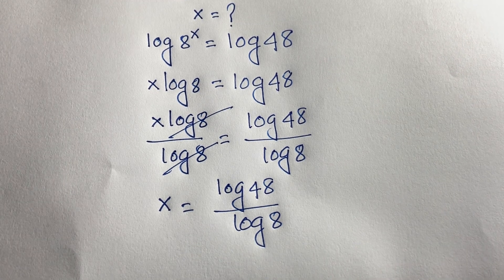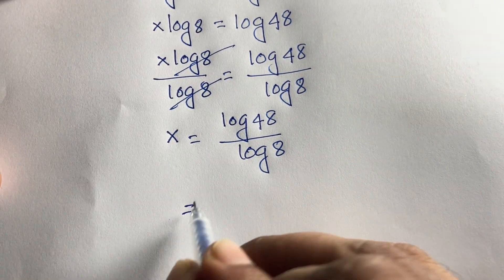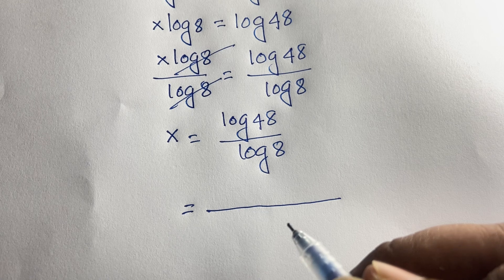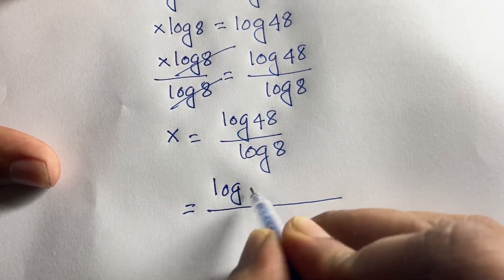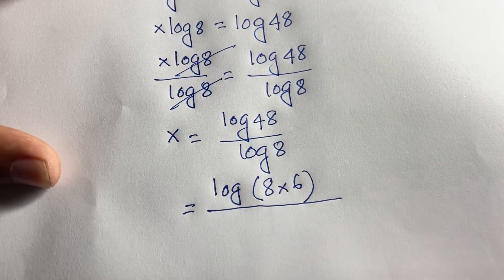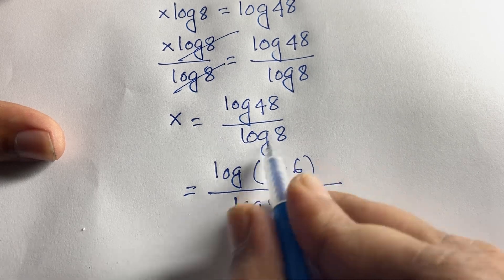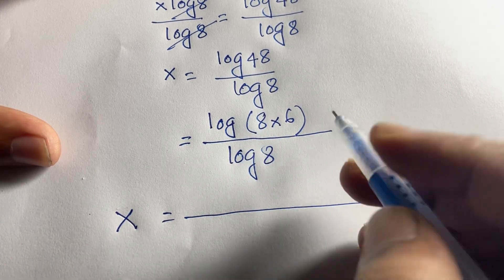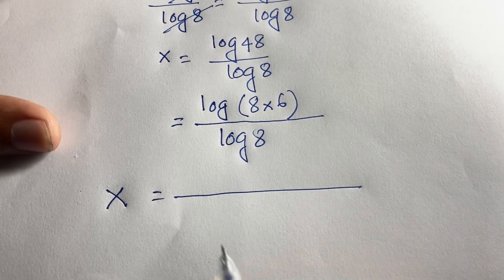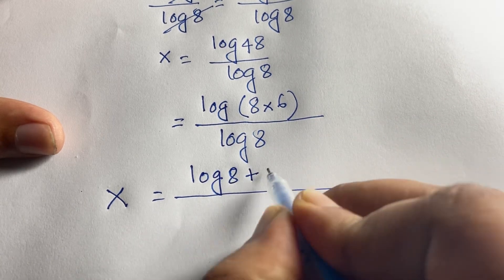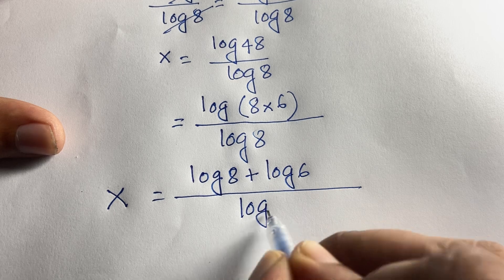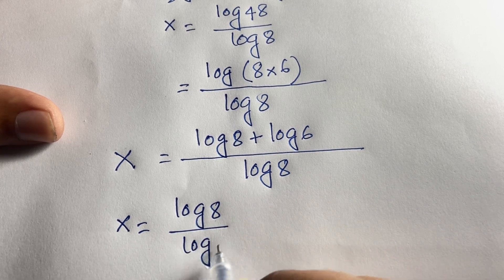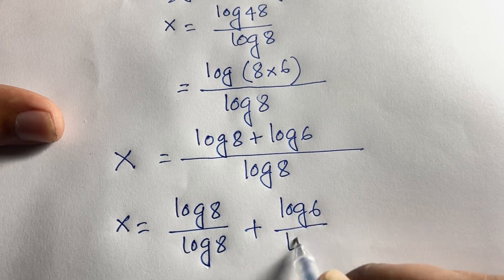But let's find the final simplified answer. If I elaborate log 48, it will be log of 8 times 6, which equals log(8 × 6) over log 8. According to logarithm rules, log A times B equals log A plus log B, so this becomes log 8 plus log 6, all over log 8.